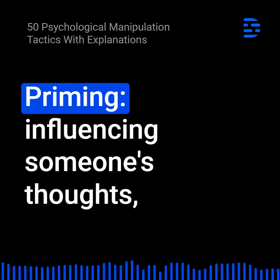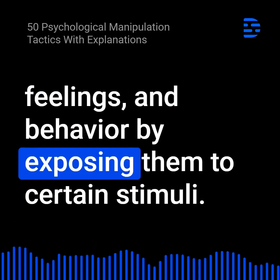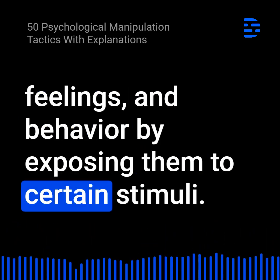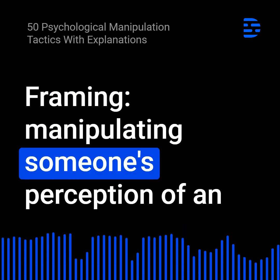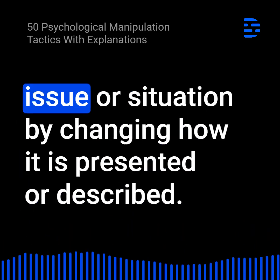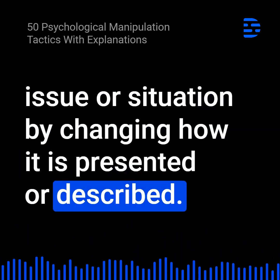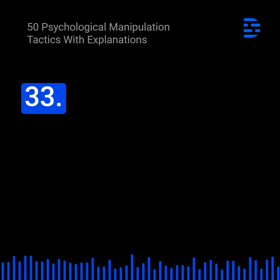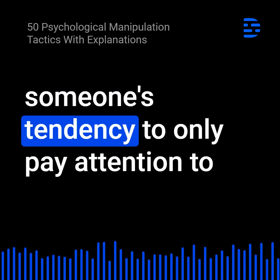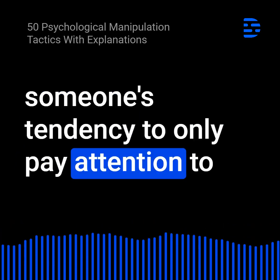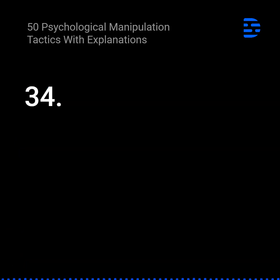31. Priming: Influencing someone's thoughts, feelings, and behavior by exposing them to certain stimuli. 32. Framing: Manipulating someone's perception of an issue or situation by changing how it is presented or described. 33. Selective attention: Exploiting someone's tendency to only pay attention to information that supports their beliefs or goals.